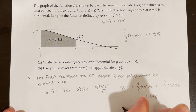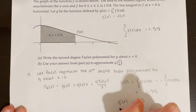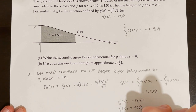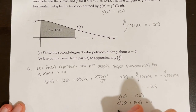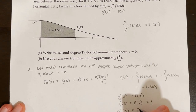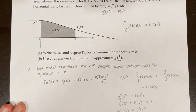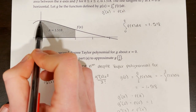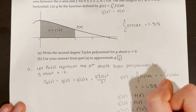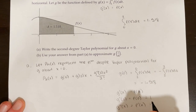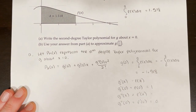Since g prime of x equals f of x, g prime of 0 equals f of 0. From the graph, f of 0 equals 1. Then g double prime of x equals f prime of x. We can see that the slope of the tangent line to f at x equals 0 is horizontal, meaning slope is 0. So g double prime of 0 equals f prime of 0 equals 0.